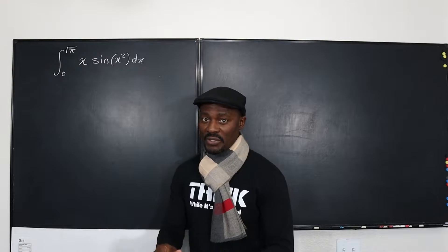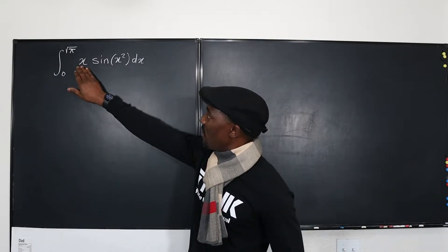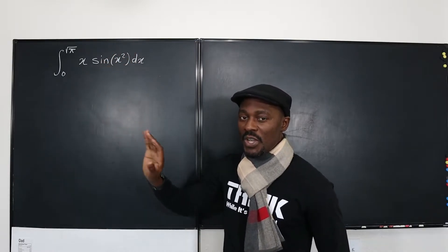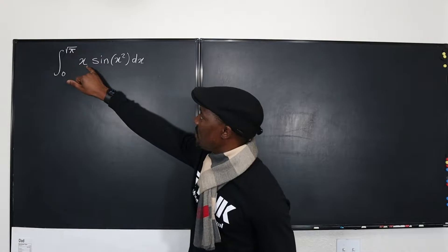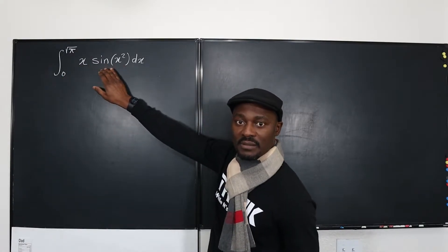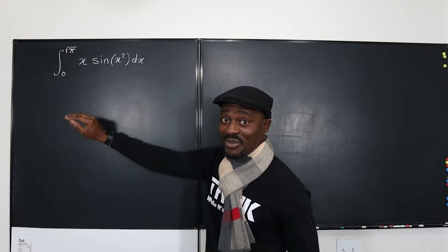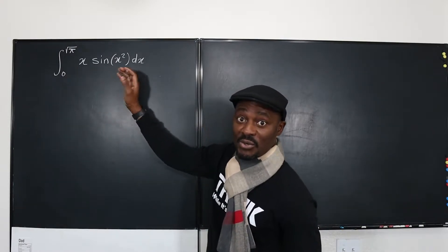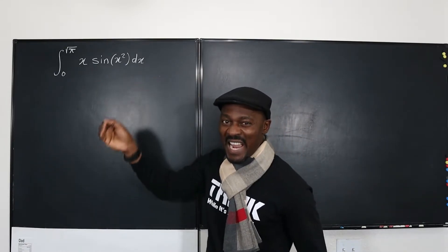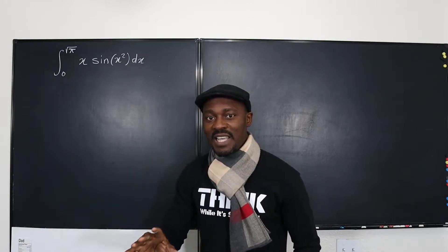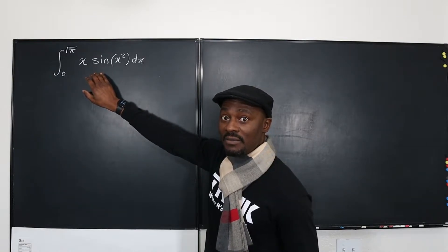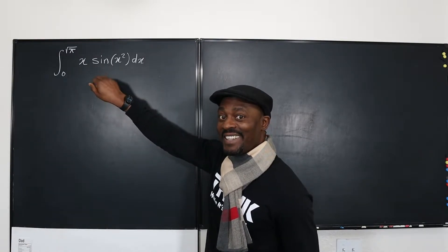Look at the two functions here. I have one function which is x, and the other function is sine of x squared. You're going to ask: if I take the derivative of the first function, will it contain anything that looks like the second? The derivative of a polynomial cannot give you a trig function. But if you take the derivative of sine x squared, will it contain something that looks like x? If it does, that's the beginning of your deliverance — let's get into it.